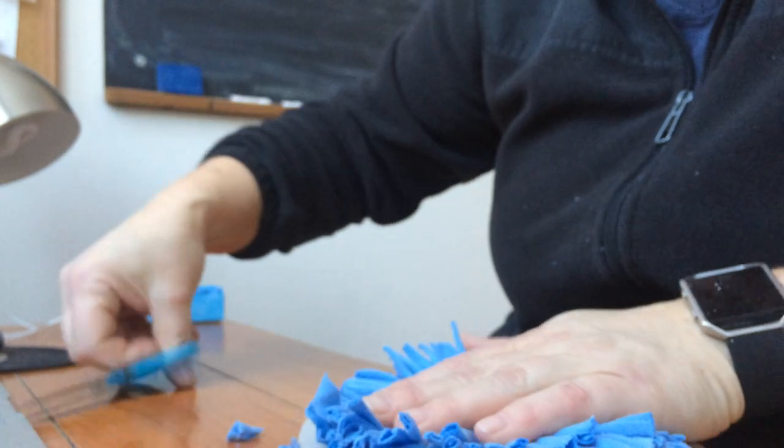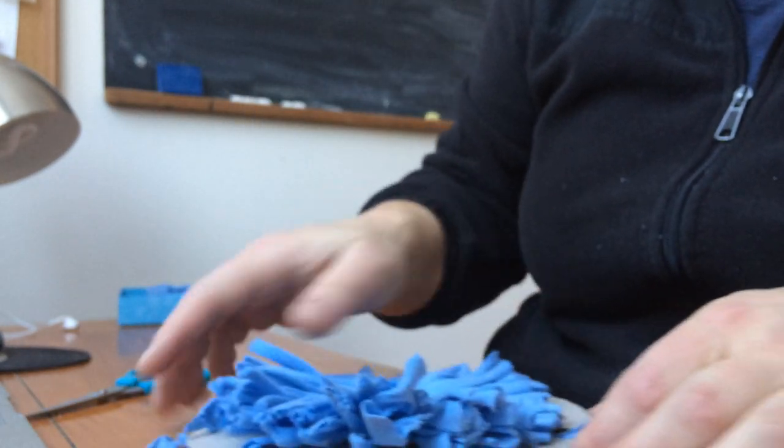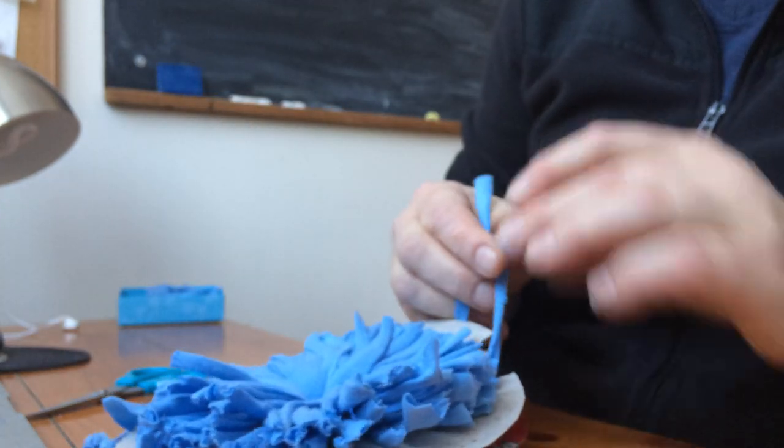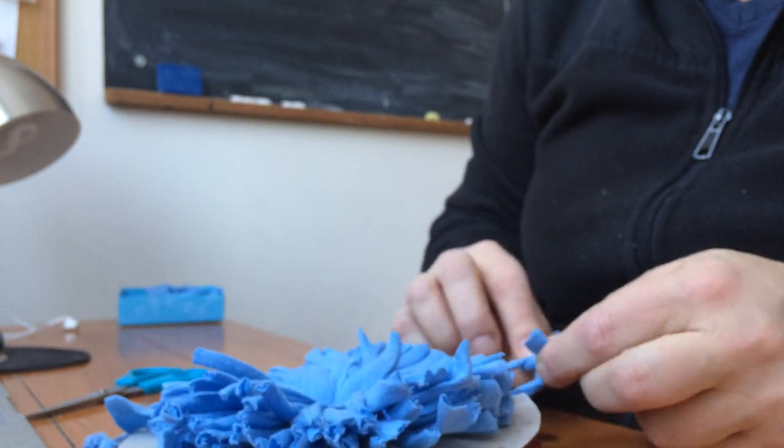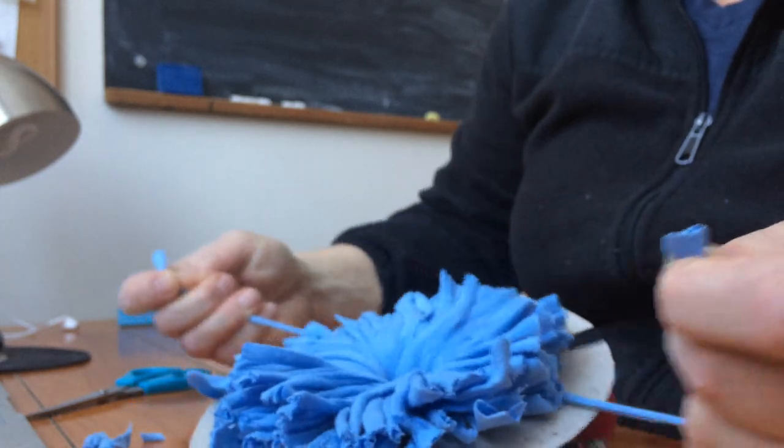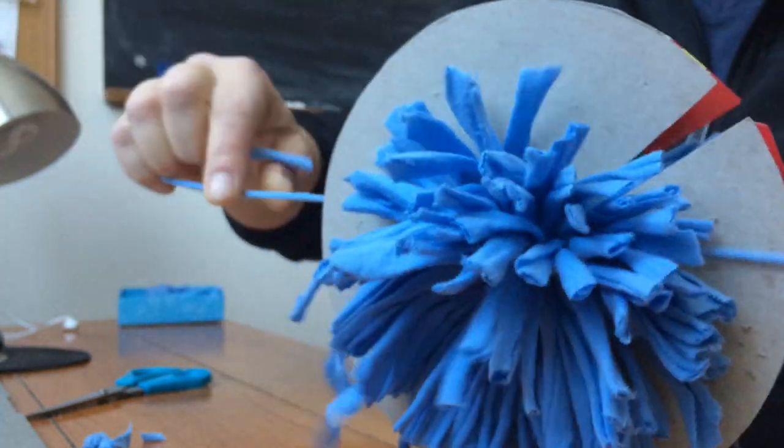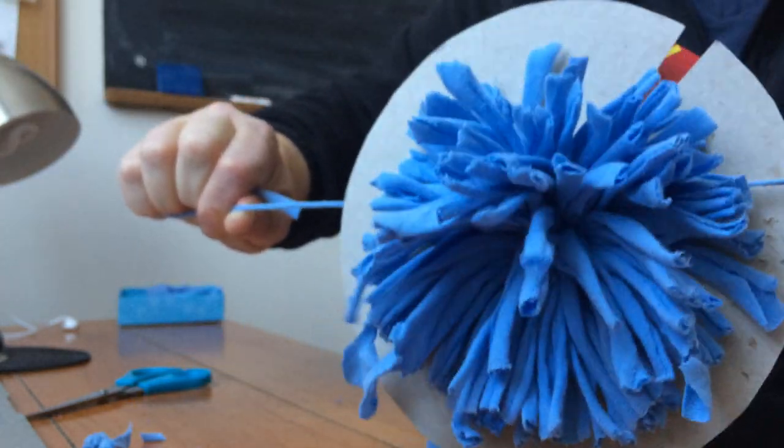So I cut all the way around. Now I have my two ends. I make a knot and I pull on both sides. I make another knot because I never trust one knot.